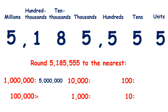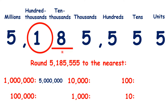Now rounding to the nearest 100,000, we find our place value, look to the right, and we can see that we're rounding up. Remember: when we round, digits to the left stay the same, and when we round up, we add 1 to the place value we're looking at and change digits to the right to zeros. So we have 5,200,000.